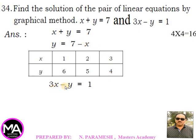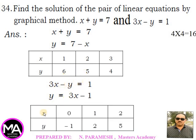Second equation: 3x minus y = 1, so y = 3x minus 1. Substituting values: x=0 gives y= -1, x=1 gives y=2, x=2 gives y=5.